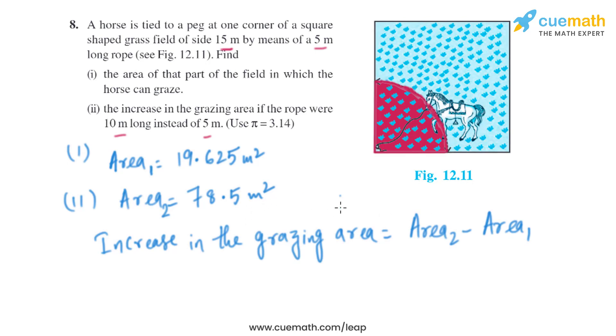So it's 78.5 minus 19.625, and on subtracting them we get 58.875 square meters. That is the increase in the grazing area.